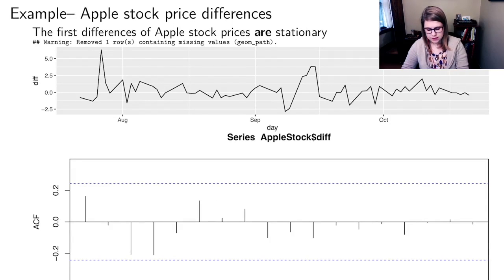For a comparison, the first differences of apple stock prices are stationary. In the time series plot, they're basically staying flat. There's a little bit of variability, but nothing major. And then if we look at the ACF, nothing is reaching to the edge there.